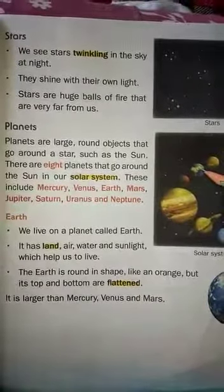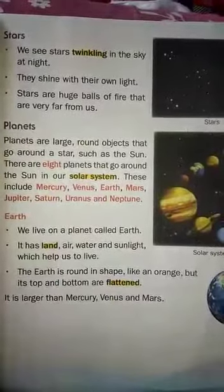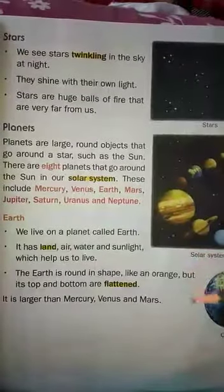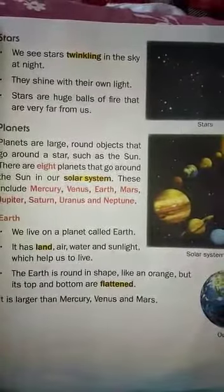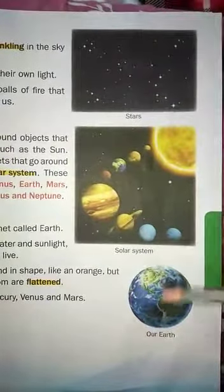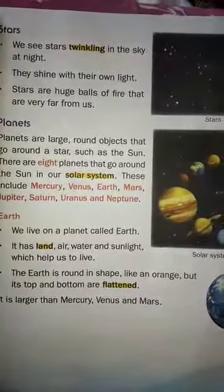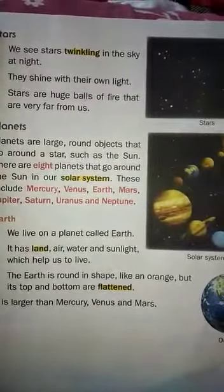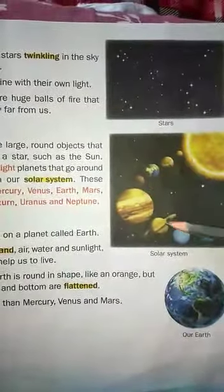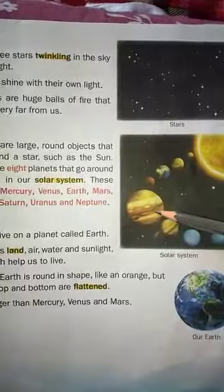Earth has land, air, water, and sunlight which help us to live — without these we cannot survive. Earth is rounded in shape like an orange, but its top and bottom are flattened. It is larger than Mercury, Venus, and Mars. Among the eight planets, Jupiter is the biggest planet of the solar system.